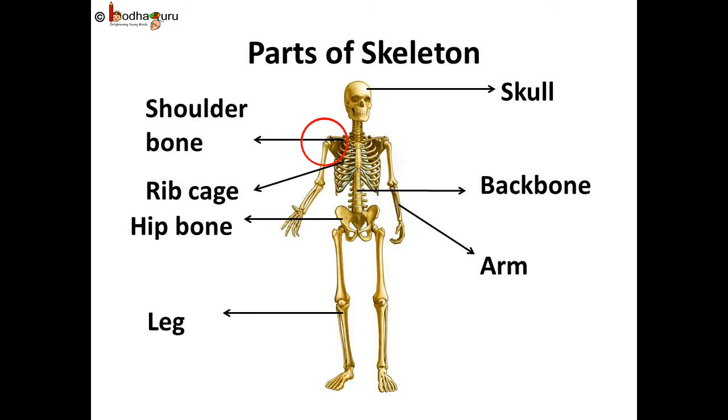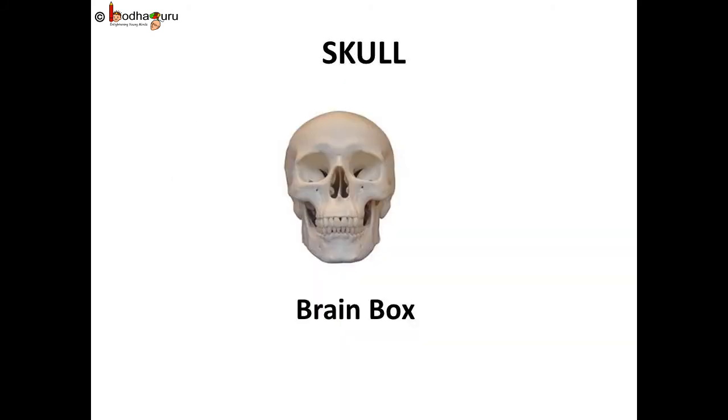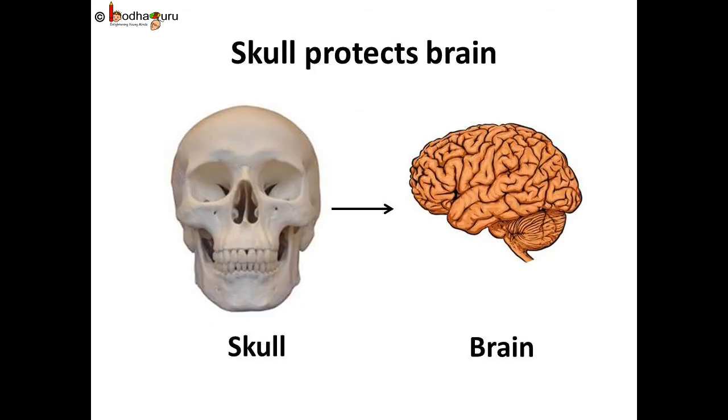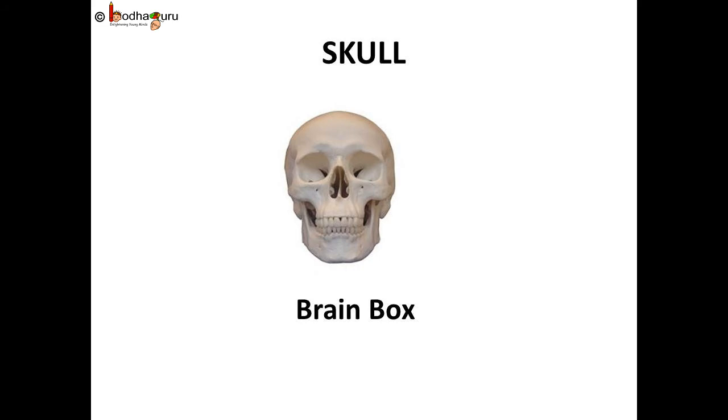The skull is also called as brain box because it protects our brain. Skull is made up of 32 bones in all. It has holes for the eyes, nostril, mouth and ears. Teeth are attached to the jaw bone. Only the lower jaw is movable among them which enables us to talk, eat etc.